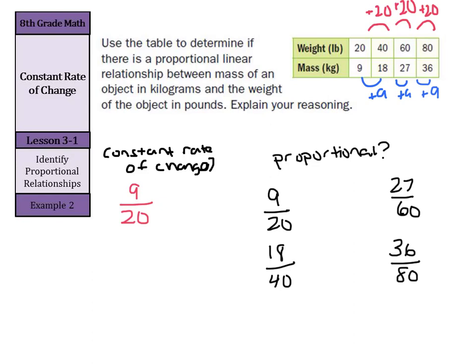Can I simplify these down so they're all the same? 9 over 20 is already simplified. I can divide my 18 and my 40 by 2 to get 9 over 20 so so far we're okay. I can divide my 27 and my 60 by 3 to get 9 over 20 so there I'm good. I can divide my last one by 4 and get 9 over 20 so there I'm good. So I have a constant rate of change of 9 over 20 and I have every single mass and weight being proportional also at 9 over 20.